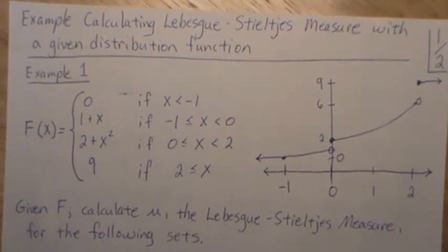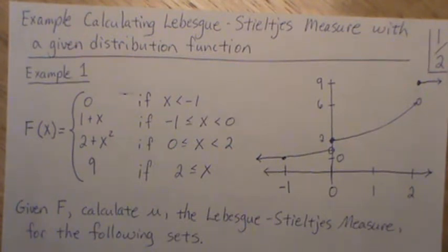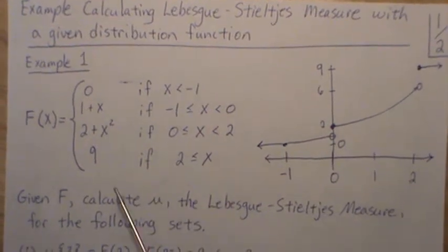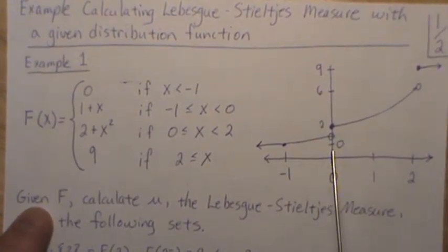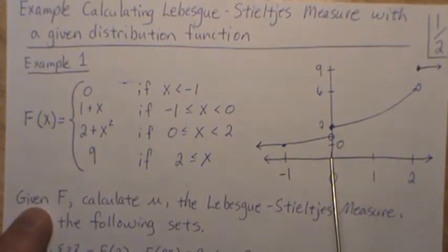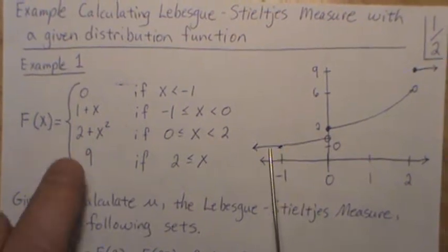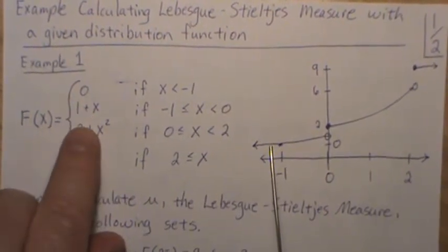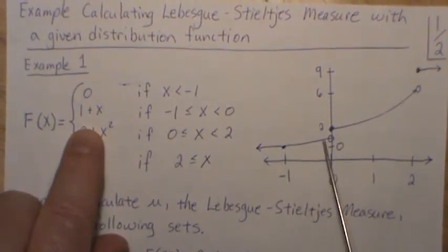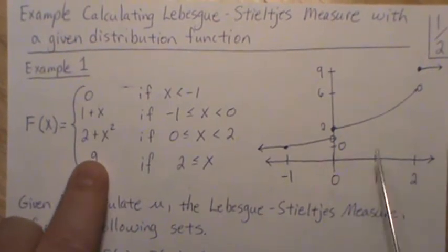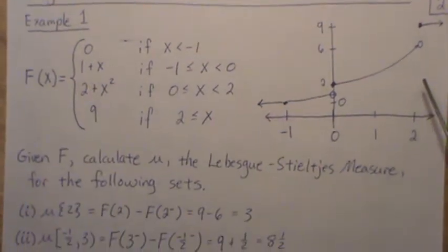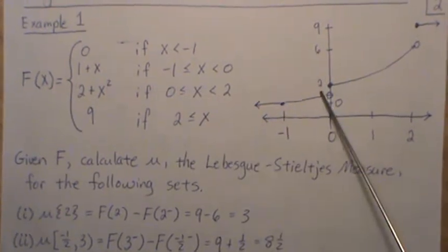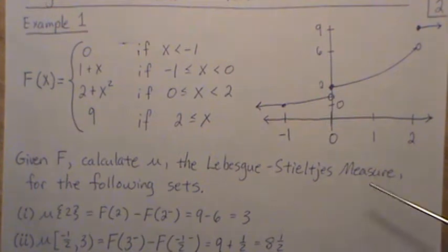Hello, this is the next video in a playlist I'm calling 'Probability Measure,' and here we're going to do an example calculating the Lebesgue-Stieltjes measure with a given distribution function. In this example, this will be our distribution function. Notice that below minus 1 it's 0, from minus 1 to 0 it's a straight line, from 0 to 2 it's a quadratic, and when we're at 2 or more it's 9. Given F, calculate mu, the Lebesgue-Stieltjes measure, for the following sets.